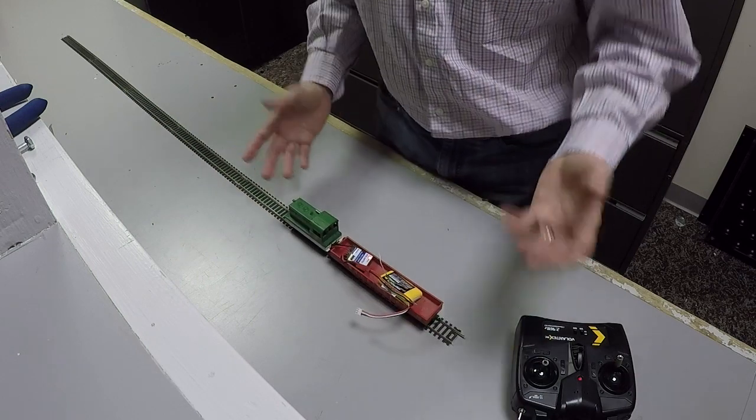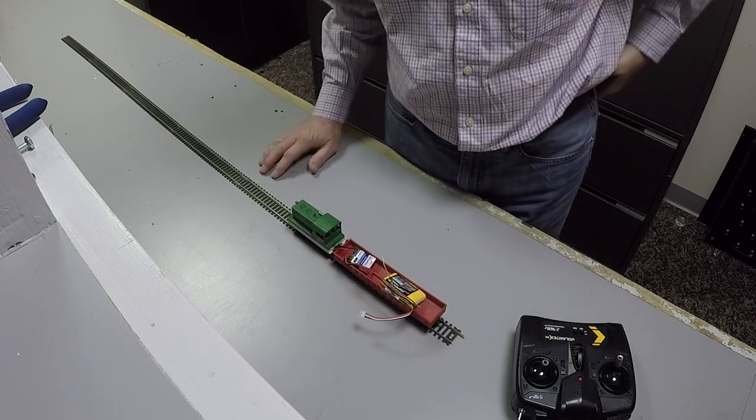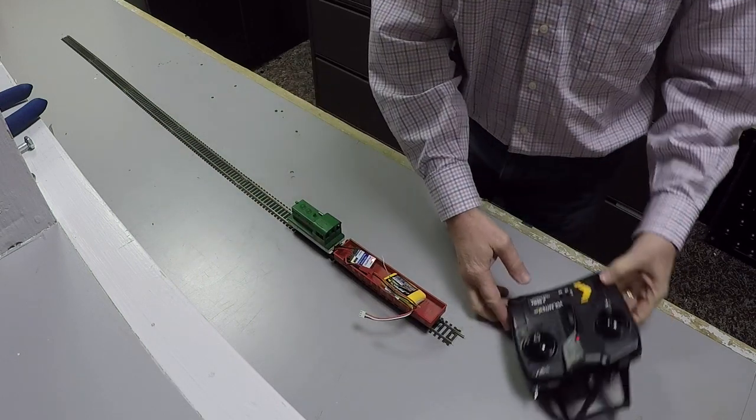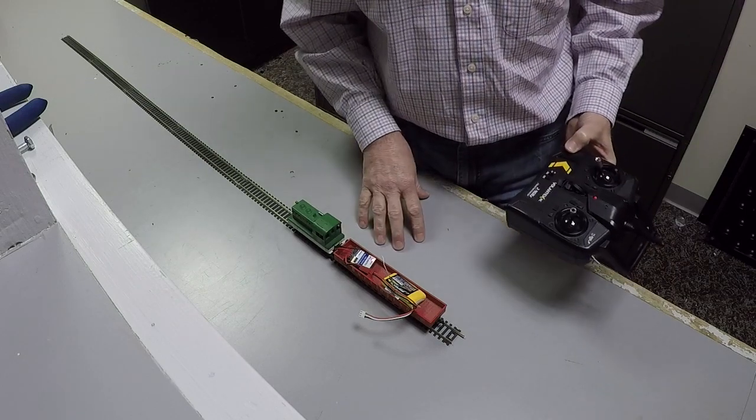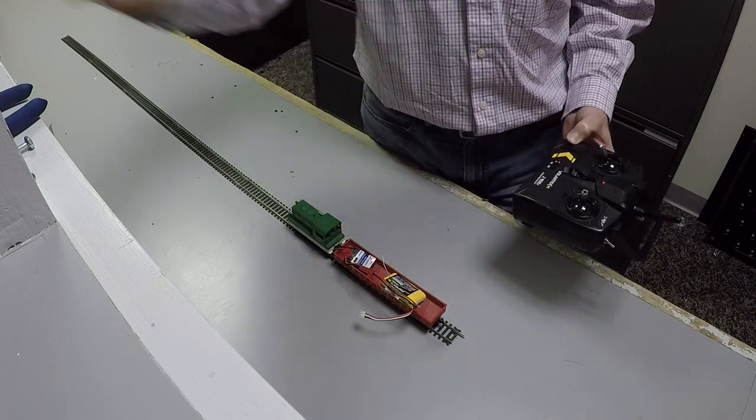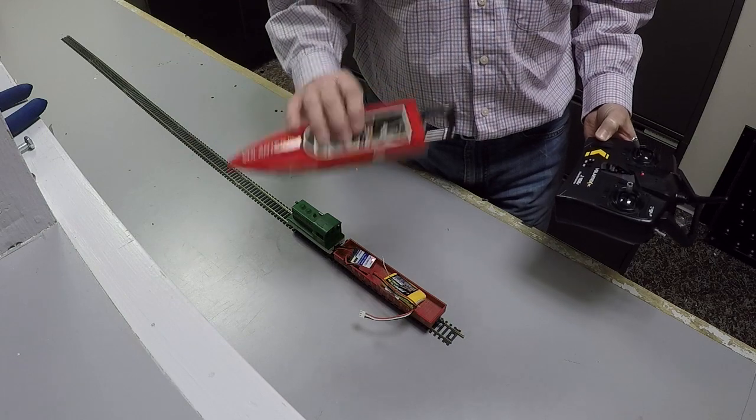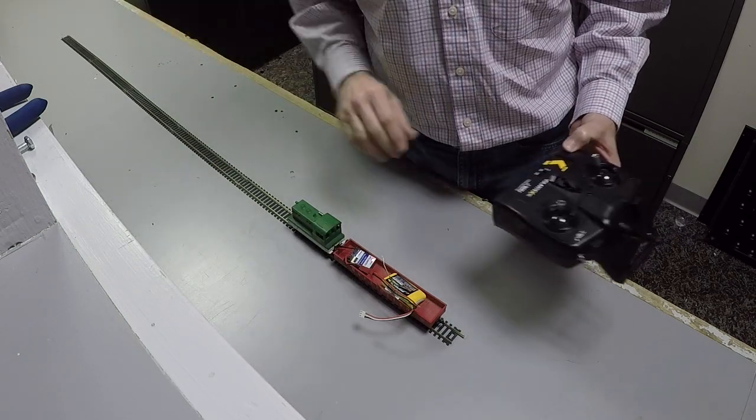You could run this in a loop, at least, if I can't figure out the reverse. But here we have a transmitter receiver from a toy boat running my HO locomotive on a dead rail.